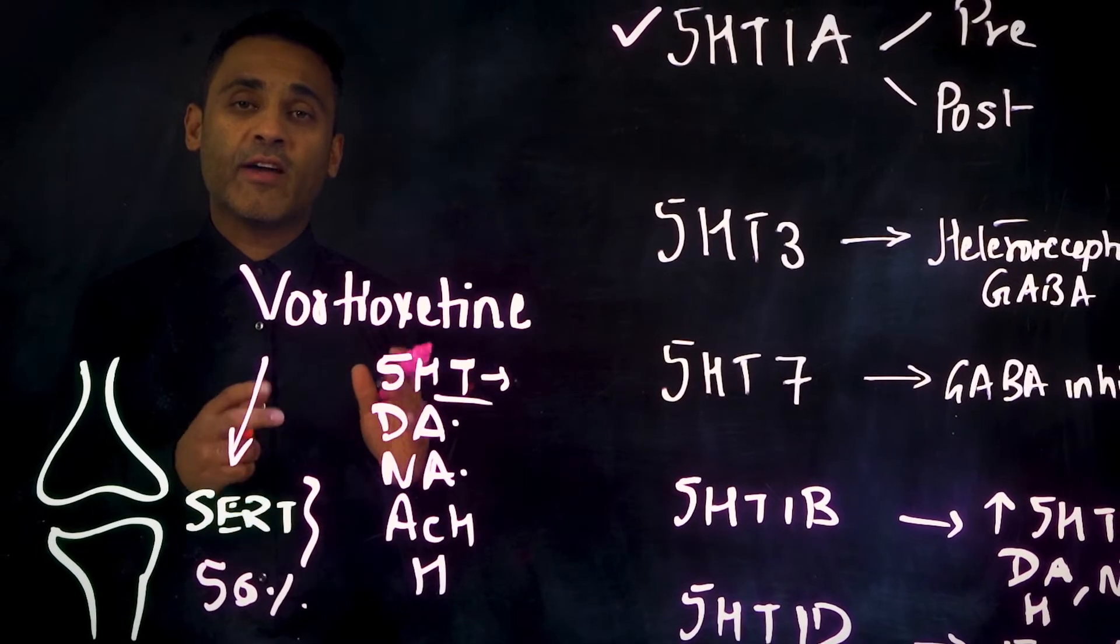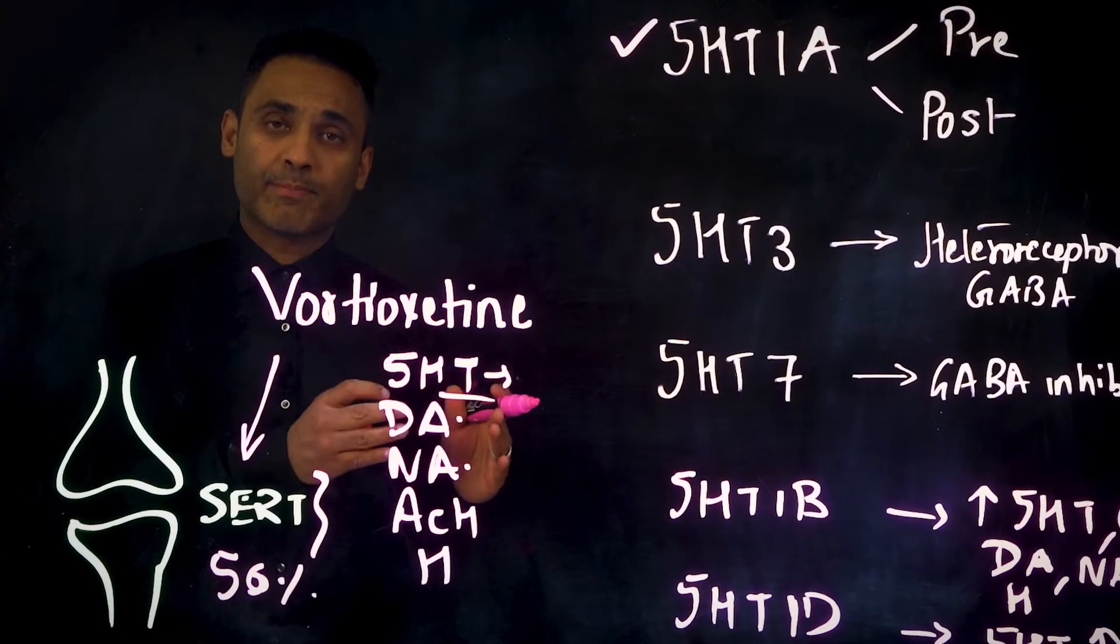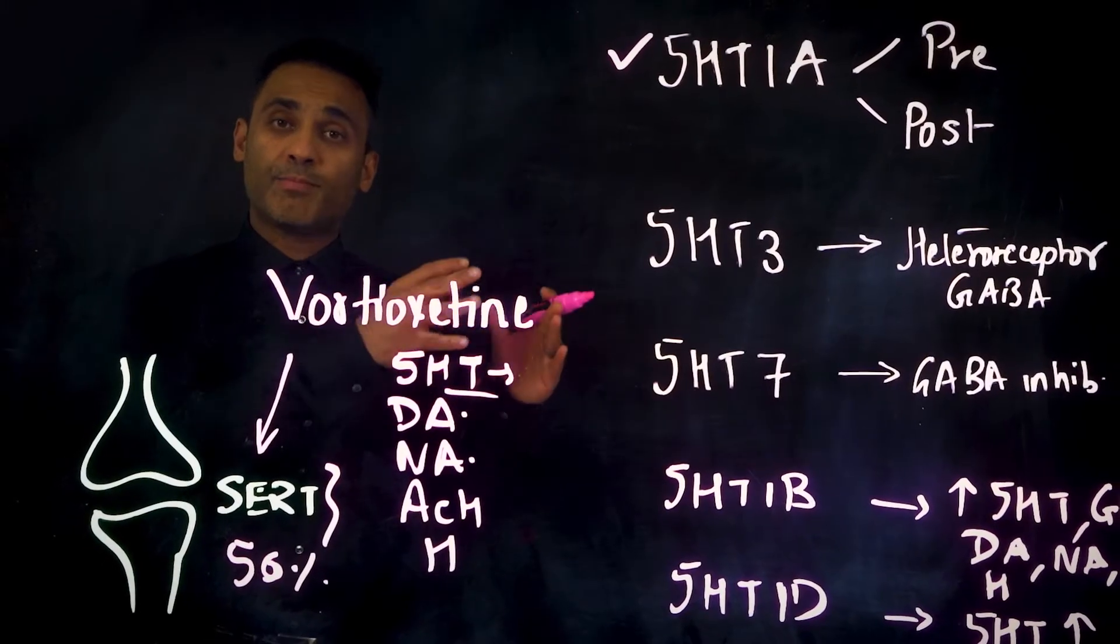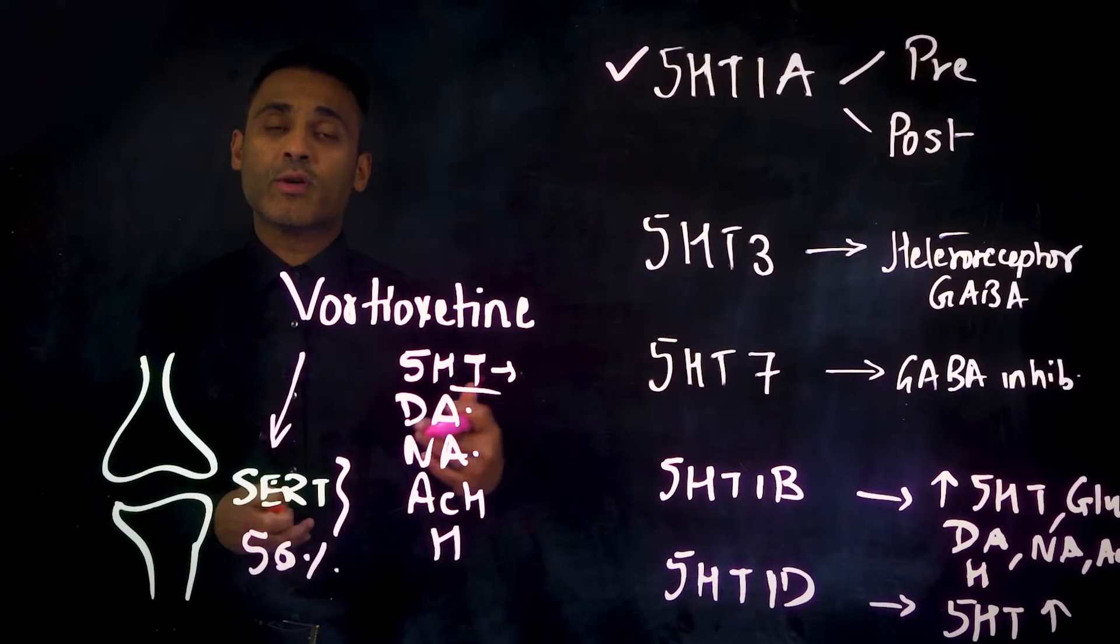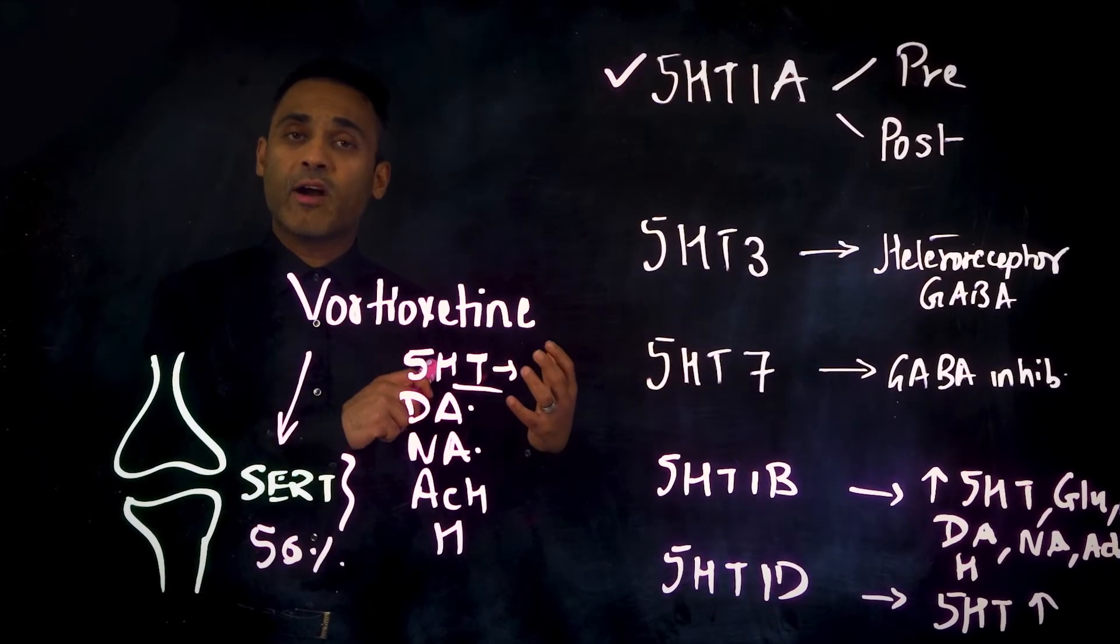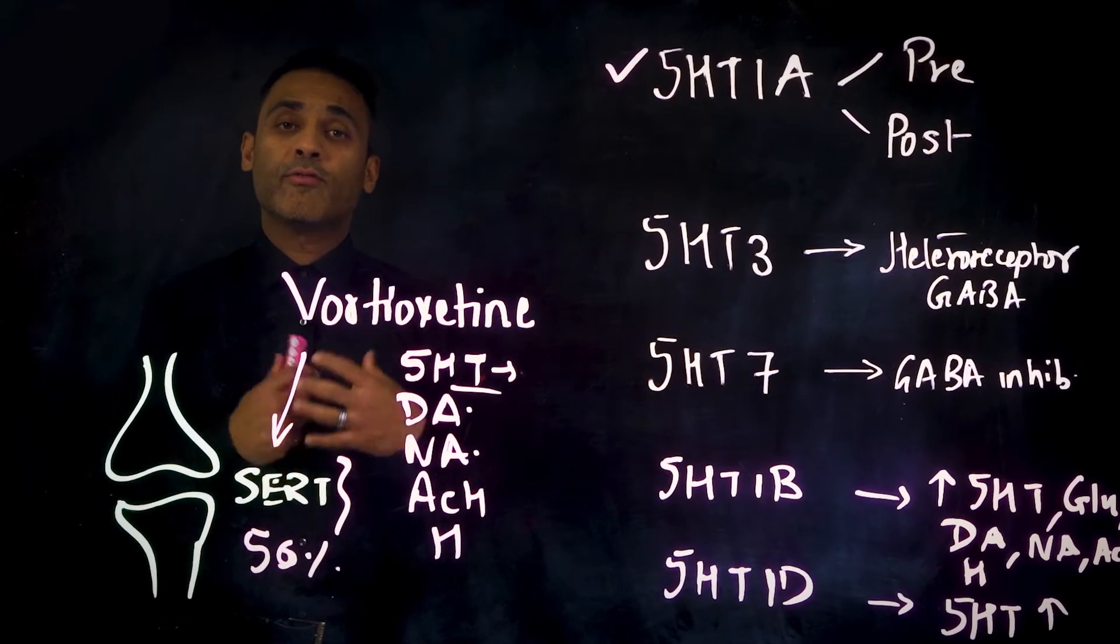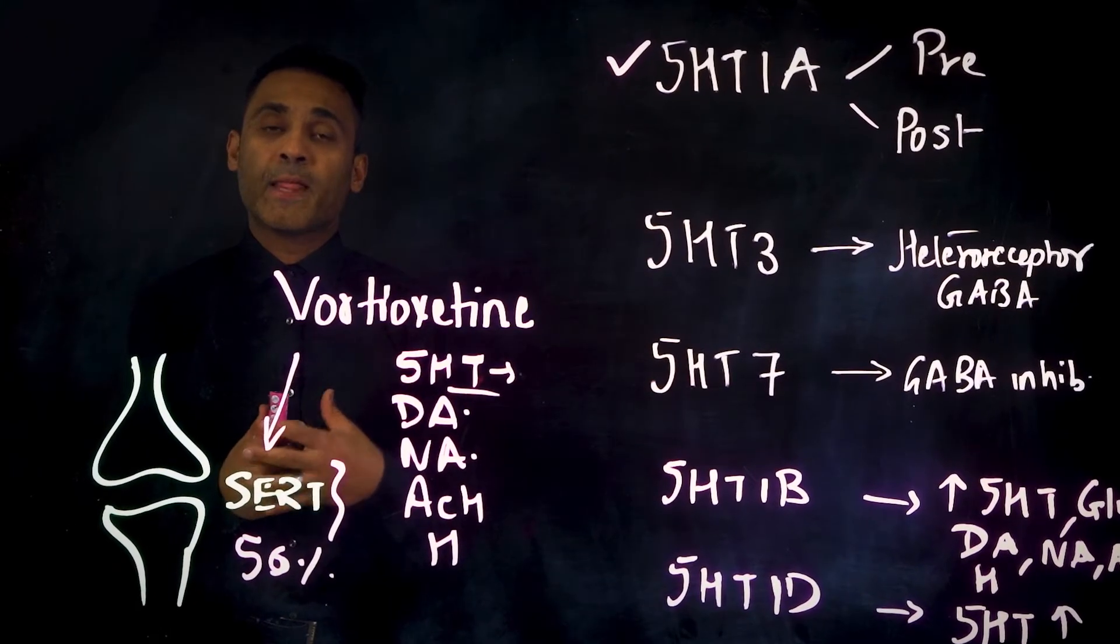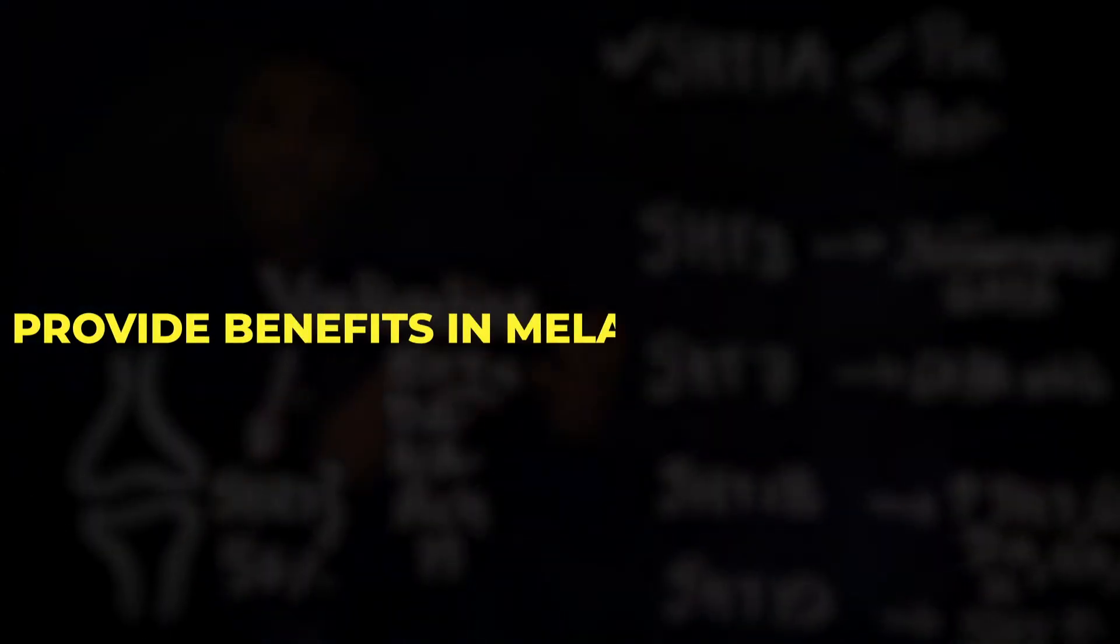Secondly, by acting at the 5-HT1A receptor as a full agonist post-synaptically, it increases levels of noradrenaline and dopamine from the ventral tegmental area into the frontal circuits. And that provides benefits in melancholic depression.